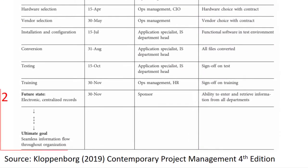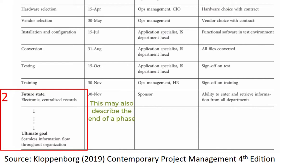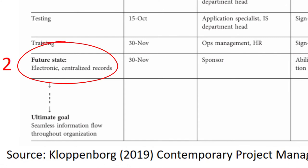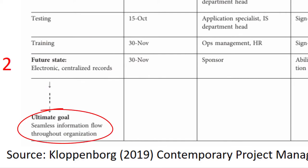Second, go to the last row and describe the project at its successful completion. This is the ideal future state that will deliver the project benefits. This may be a specific outcome or it could describe the end of a phase depending on the type of project, and should be very short. Using our examples: there are electronic centralised records, flowing down to an ultimate goal focused on better performance — such as seamless information flow throughout the organisation.